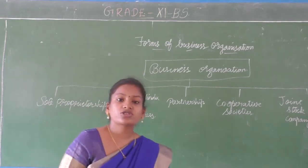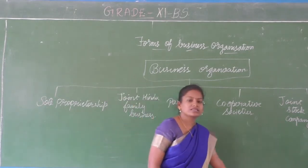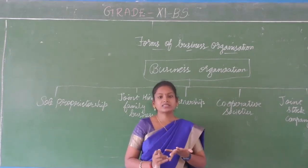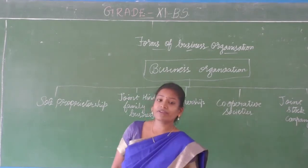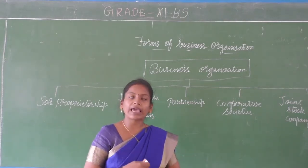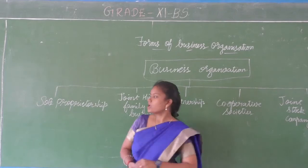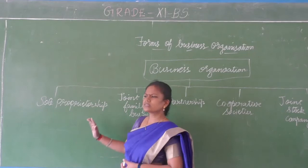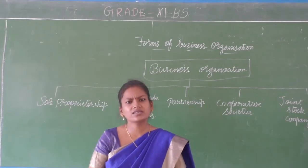What are we going to do in this chapter? We are going to deal with each and every form of business organization individually - studying the features, merits and limitations of each form. Only then will we be able to choose the right form of ownership for our own business. We are going to start with sole proprietorship, which is found to be the easiest, simplest form of business organization.